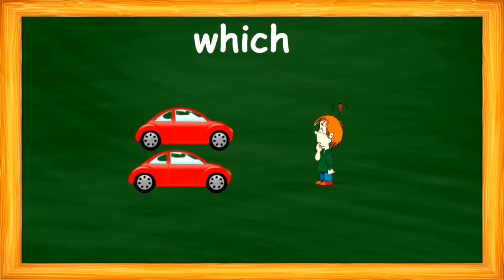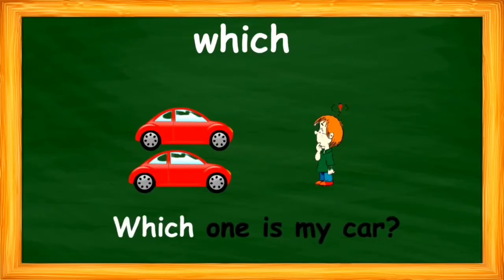Look at this picture — you can see a boy is standing. Don't you feel the boy is thinking something? You can see two same kind of cars in front of him. So the boy is saying, 'Which one is my car?' The boy has got confused, so he is asking, 'Which one is my car?'